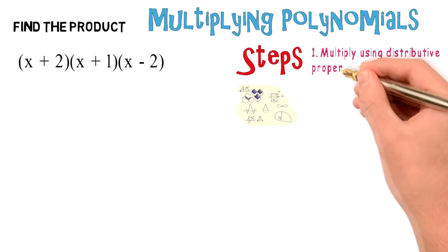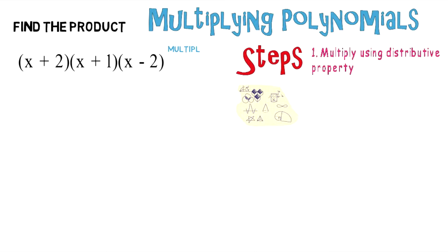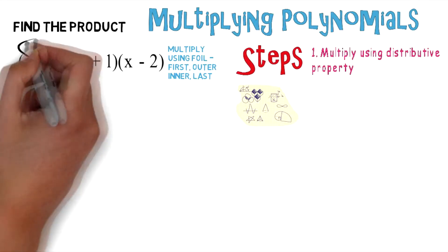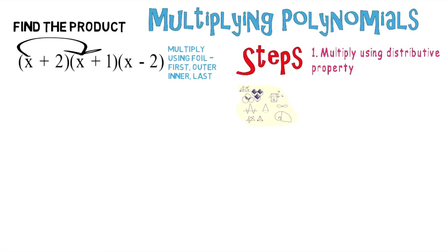using the distributive property. For this first part, you're going to multiply using FOIL, which as you remember stands for First, Outer, Inner, Last. So you can start by multiplying x times x, x times 1, 2 times x, and 2 times 1.